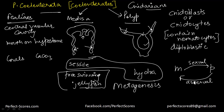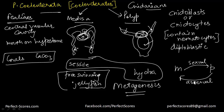Some cnidarians can alternate between these forms and exhibit a process called metagenesis. Moving from medusa into a polyp form requires sexual reproduction; changing from a polyp into a medusa requires asexual reproduction. They have a central gastrovascular cavity, and the mouth is usually present on the hypostome, which is the opening of the cavity. One example mentioned was corals, which have a layer of calcium carbonate as well. So that was all the basic information about Coelenterata.